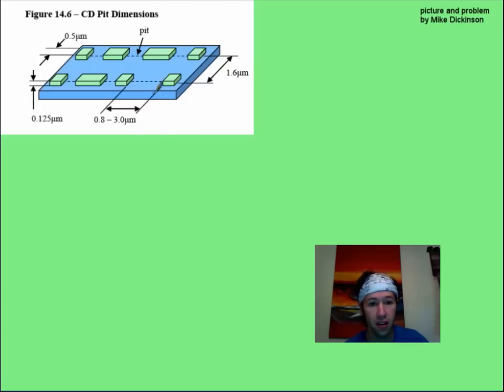If we zoom in on a CD, we'd already talked about how it's got these spirals of information. 1.6 micrometers, we're going to assume that's our width, and the smallest distance you can have between the lands or the pits is going to be 0.8 micrometers.